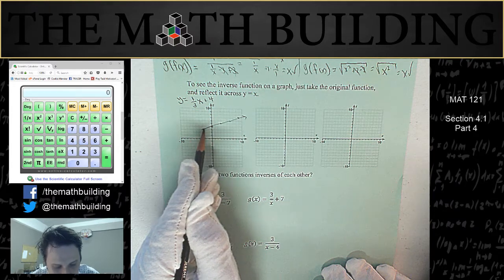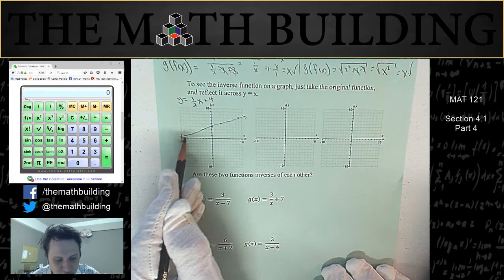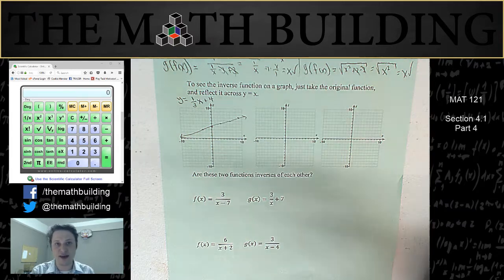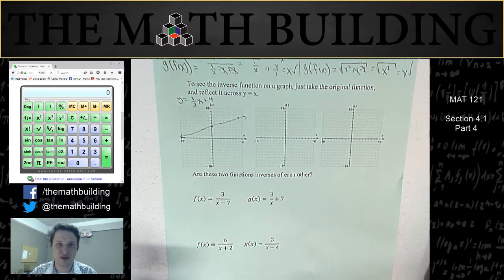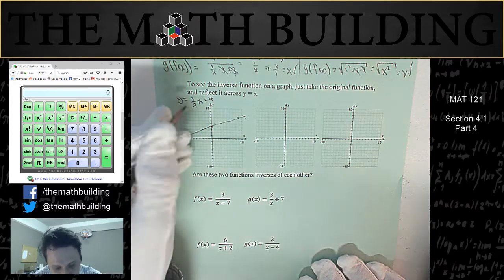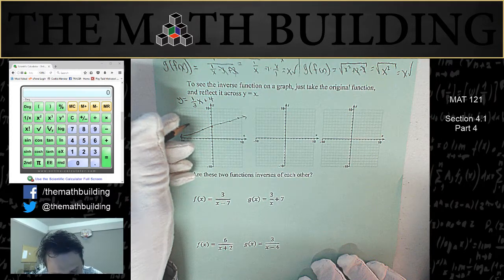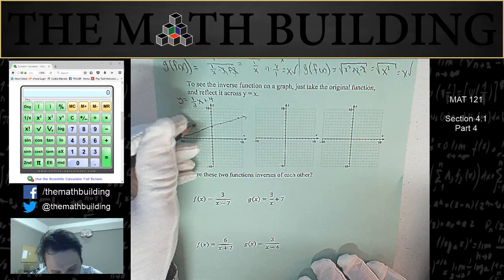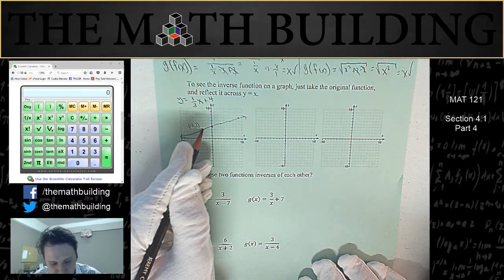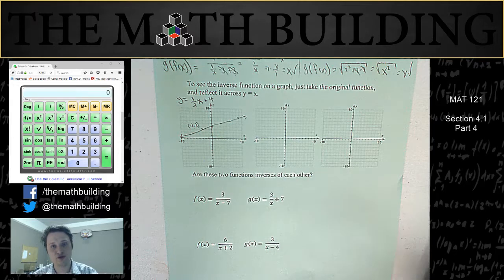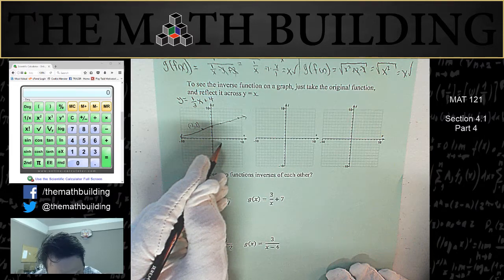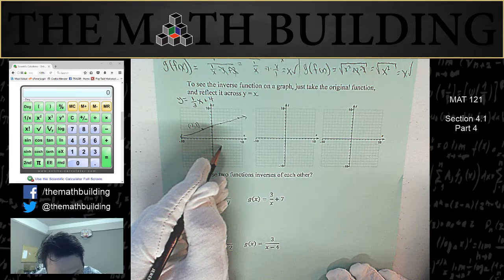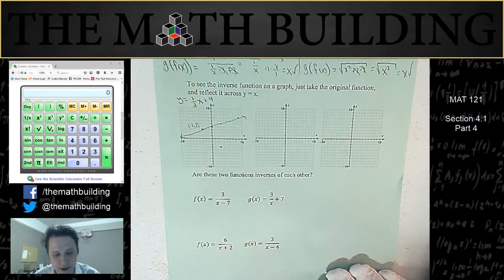Remember that what an inverse function basically does is instead of sending the inputs to the outputs, it reverses it and puts the outputs to the inputs. So if you have a graph, what you should do is say this is the point negative 3, 3. What you do is you flip the x and y, and then that point is on your inverse function. So 3, negative 3 would be on our inverse function.